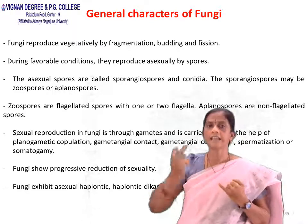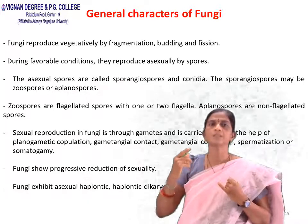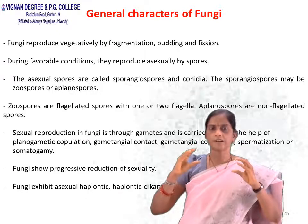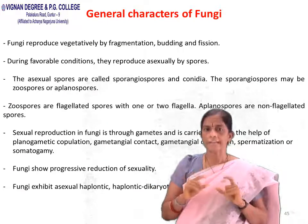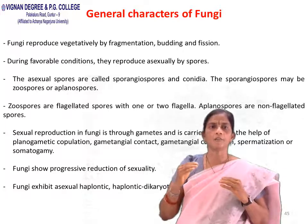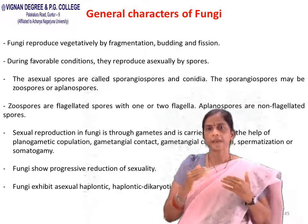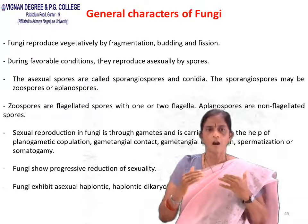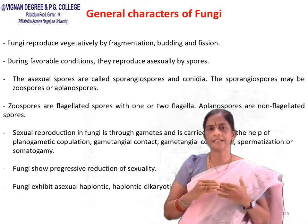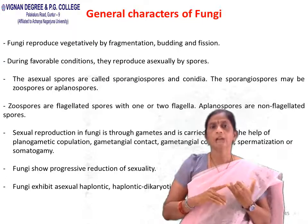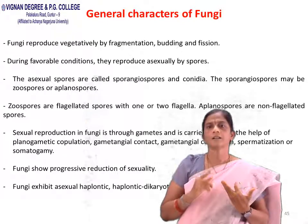Sporangiospores may be zoospores (flagellated, with one or two flagella) or aplanospores (non-flagellated). Sexual reproduction in fungi is carried out with the help of planogametic copulation, gametangial contact, gametangial copulation, spermatization, or somatogamy. Fungi show progressive reduction of sexuality and exhibit haplontic, dikaryotic, haplodiplontic, or diplontic reproduction.